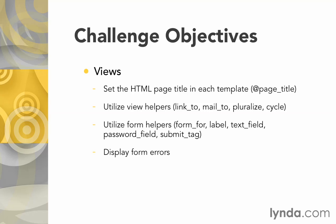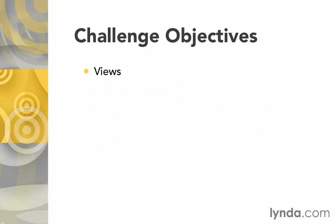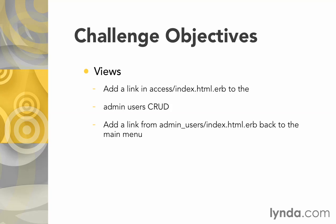Make sure that you display the form errors using those form error helpers as well, so that if a user encounters a problem while updating an admin record, they'll be able to see what went wrong. Once you've got the admin user CRUD working and well tested, add a link to that CRUD from the main menu at access/index.html.erb. Then add a link the other direction as well, so that from the admin user's index page you can go back to the main menu page.